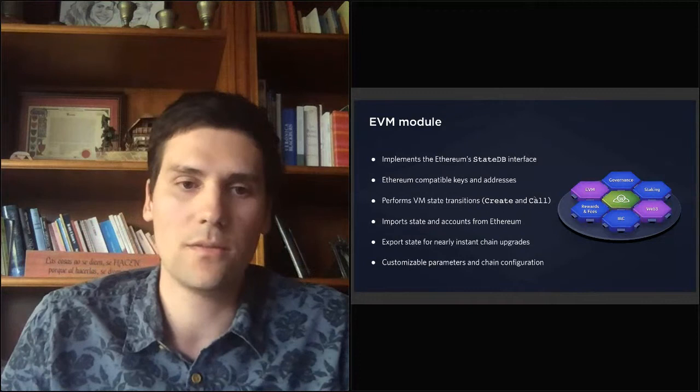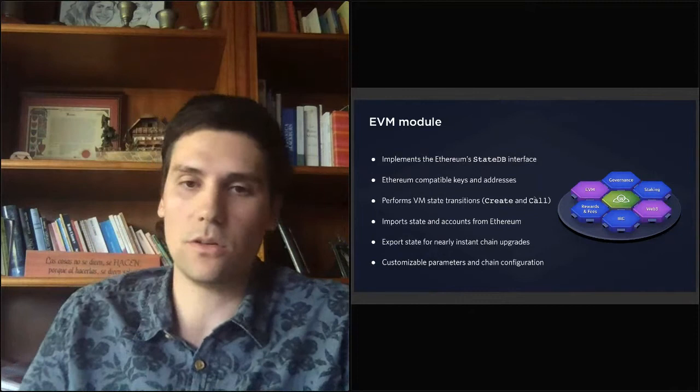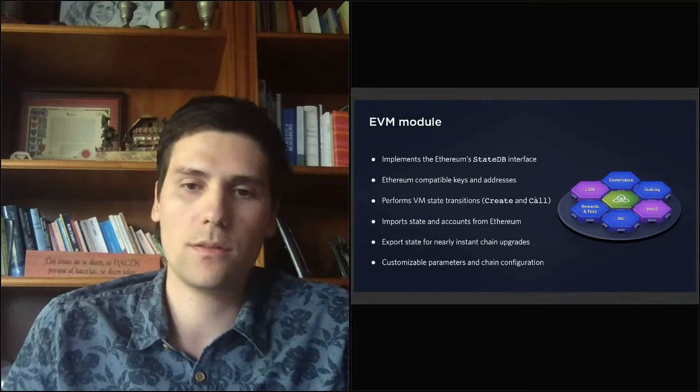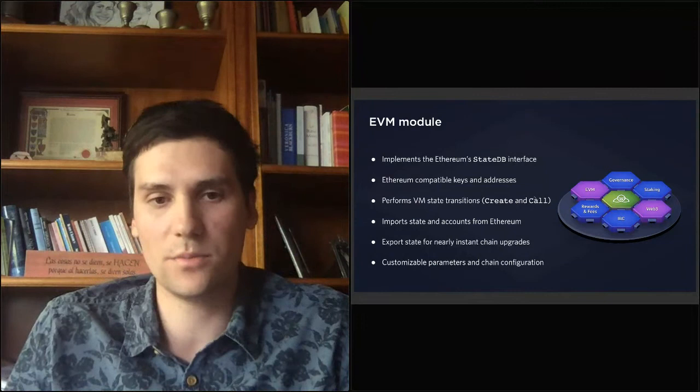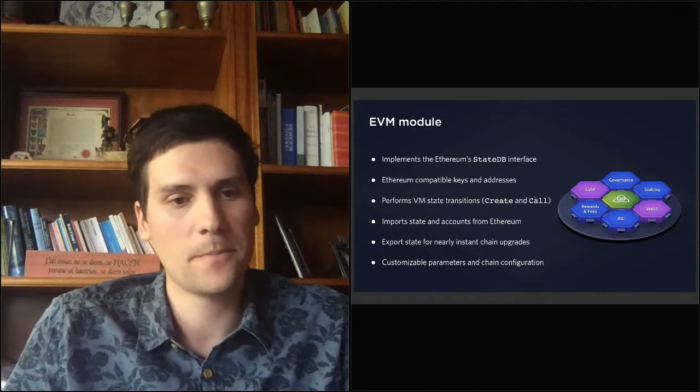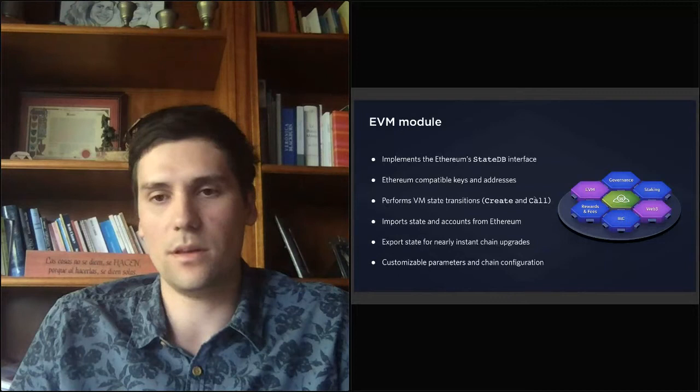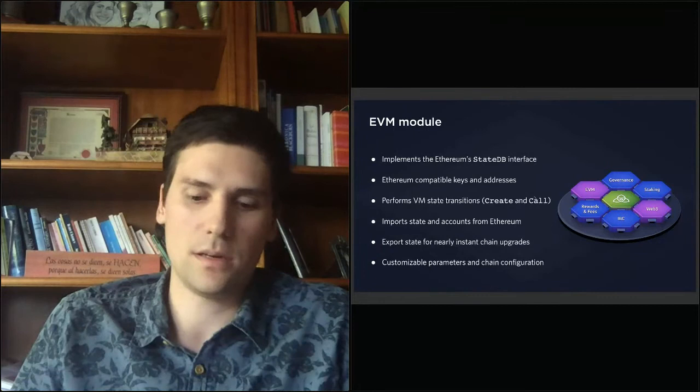The EVM module itself performs all the VM state transitions, such as create and call, for creating new smart contracts and calling those smart contracts on Ethereum. One of the features we're looking to implement in the future is importing state on accounts directly from Ethereum through a snapshot — which is called hard spooning — and you will also be able to export the state from Ethermint for nearly instant chain upgrades.